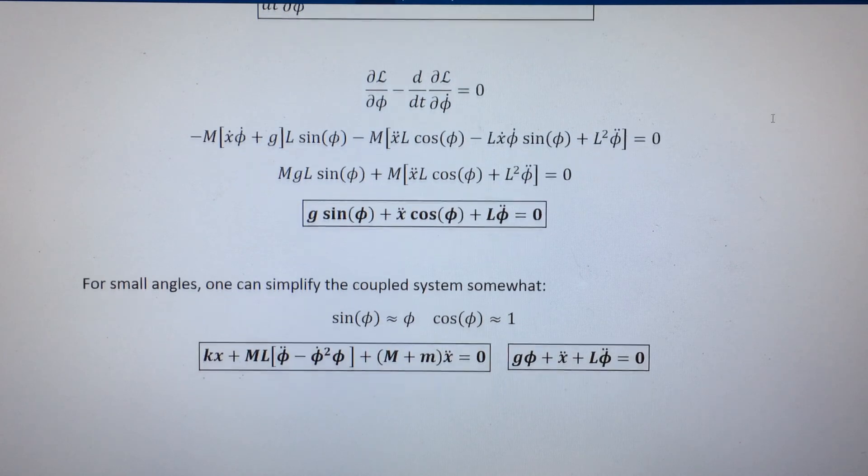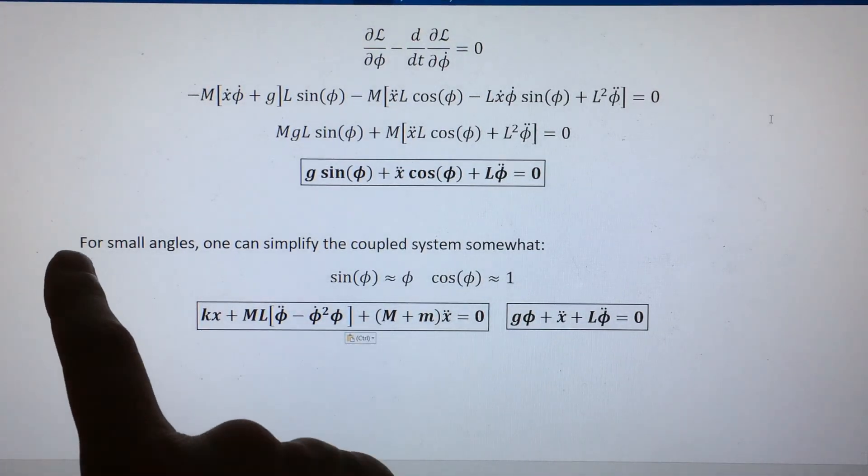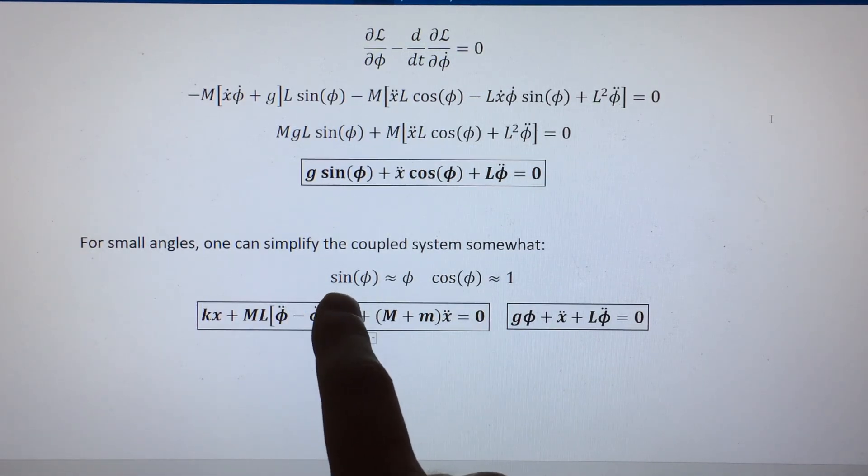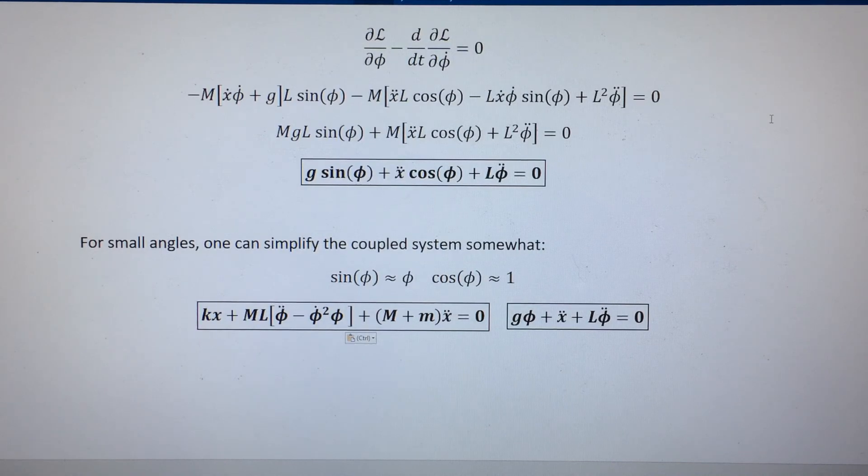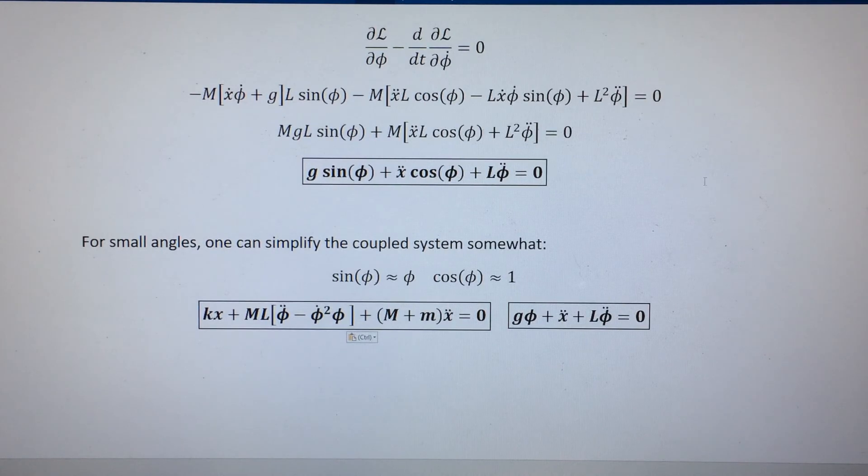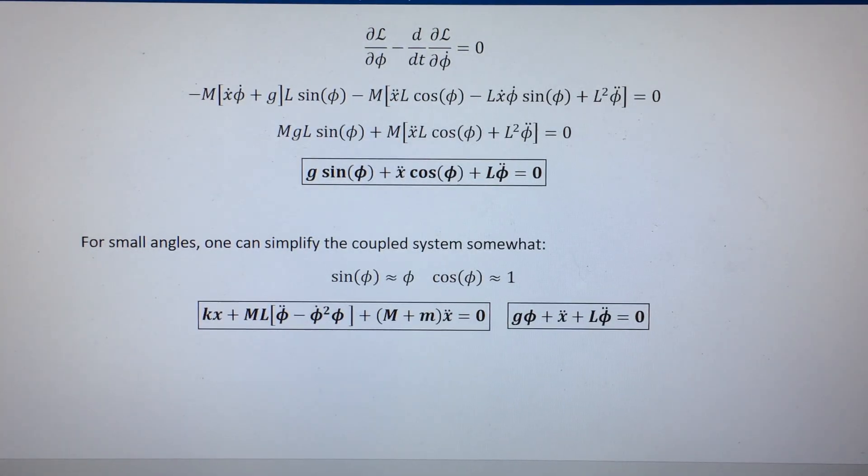We can actually simplify it further for the case of small angles. This doesn't decouple the system or stop it from being non-linear, but it certainly decreases the nastiness of the non-linearity. Here we take the small angle approximation. In that case, sine phi just acts like a linear function of the angle, and cosine phi is roughly equal to 1. Inserting that, we get this pair of results for the small angle equations of motion. A little bit better, but not perfect.